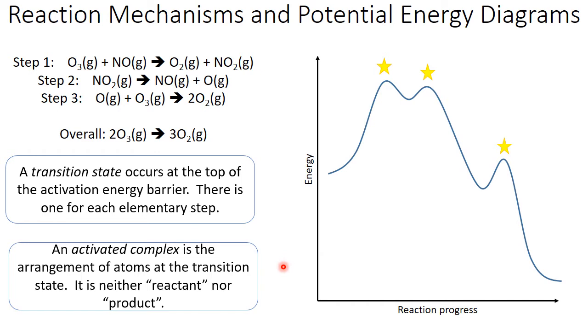At each of these transition states, the molecules are taking on a configuration called the activated complex. This is the arrangement of those atoms at that particular transition state. It's neither reactant nor product, but a kind of in-between structure where there are bonds that are simultaneously being broken and formed.